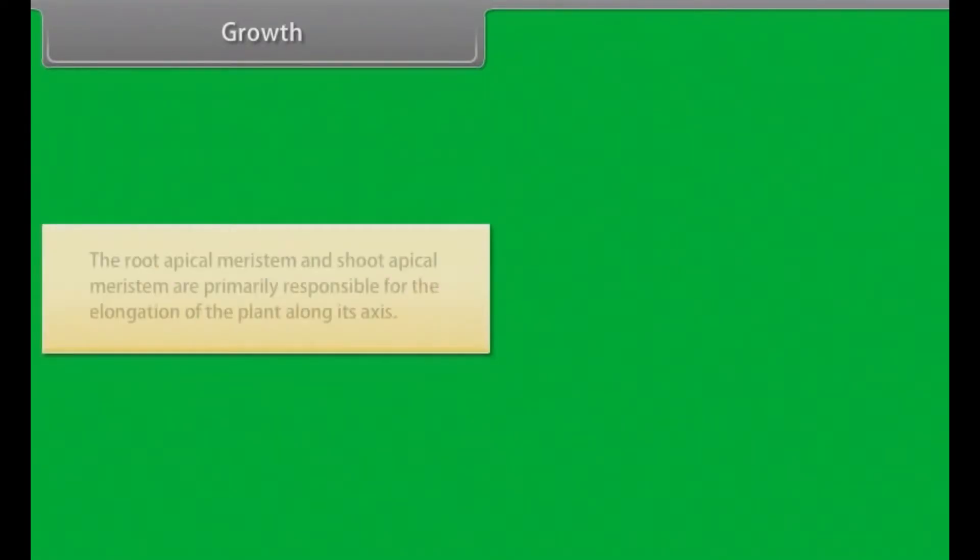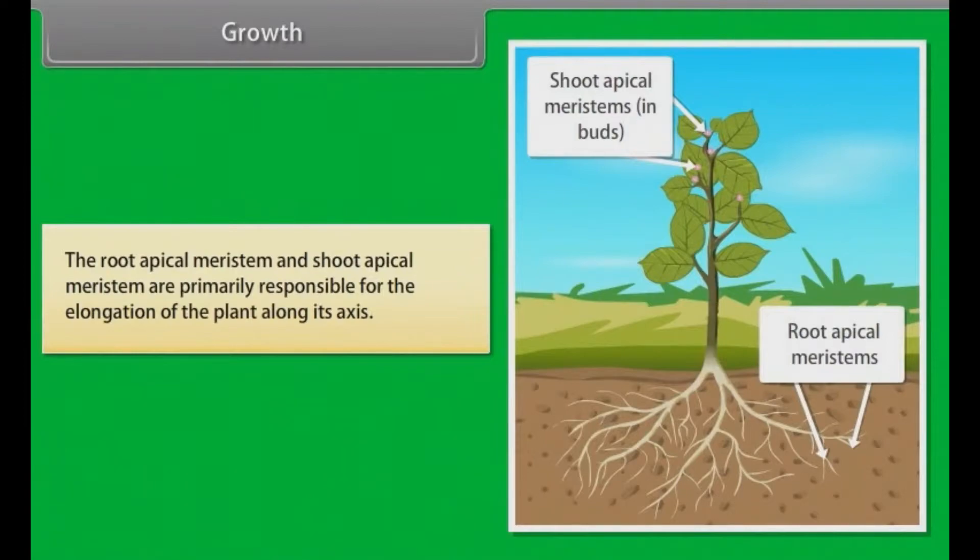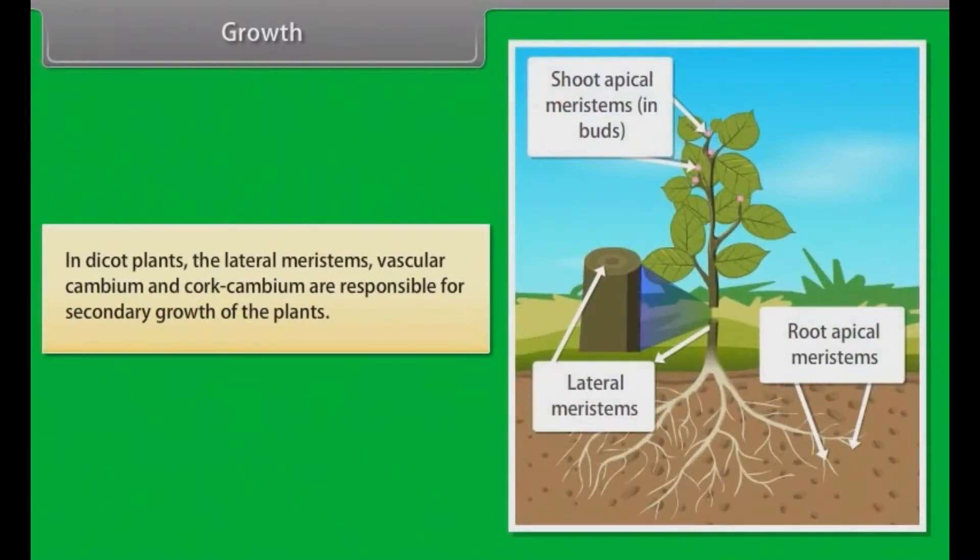The root apical meristem and shoot apical meristem are primarily responsible for the elongation of the plant along its axis. In dicot plants, the lateral meristems, vascular cambium and cork cambium, are responsible for secondary growth of the plants.